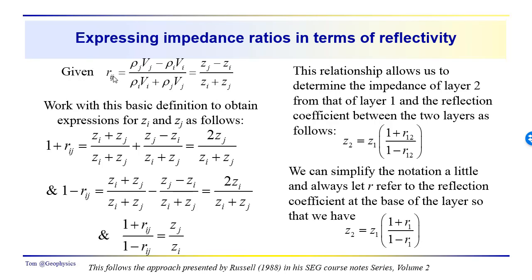Coming back to the basic definition for the reflection coefficient between layers i and j, we have this difference of acoustic impedance over the sum of the two impedances: z sub j minus z sub i over z sub i plus z sub j. We can work with this to determine one plus r sub i j by adding one — that's z sub i plus z sub j over z sub i plus z sub j, plus r sub i j — giving us two times z sub j over z sub i plus z sub j. Likewise, one minus r sub i j gives us two z sub i over z sub i plus z sub j.